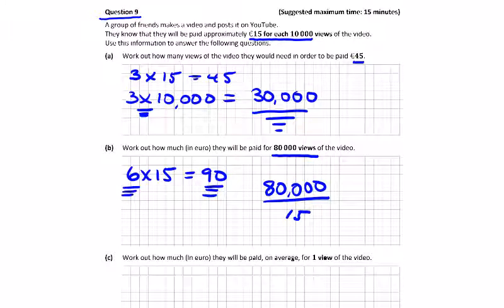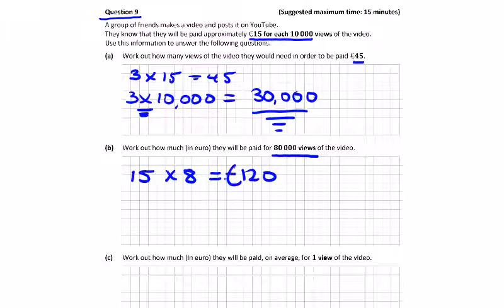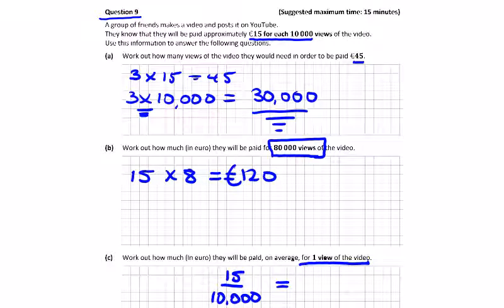How much will they be paid for one view? If it's €15 for 10,000 views, then for one view it's €15 ÷ 10,000. Moving the decimal four places gives €0.0015, which is less than one cent per view.